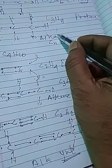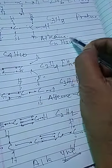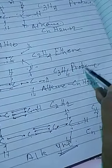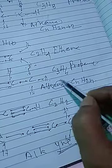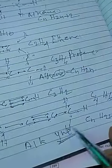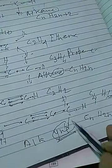To summarize: for a single covalent bond we use the suffix -ane (alkane); for a double covalent bond we use -ene (alkene); and for a triple covalent bond we use -yne (alkyne). This is all for today. We will see the rest in the next class. Wish you all the best.